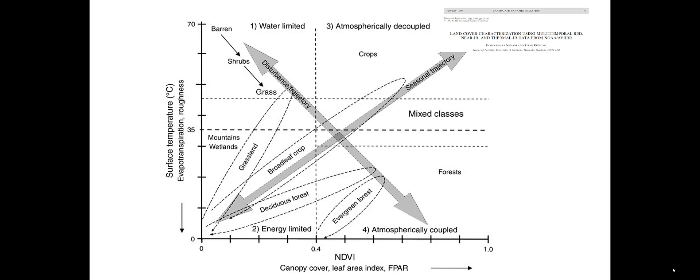One index we can derive from MODIS is called the Disturbance Index, from a paper by Namani and Running. It compares the temperature of a pixel to its greenness, with the idea that if that ratio varies in a negative or positive direction, we can tell what type of environment that pixel is under. In different quadrants, greenness is on the x-axis and temperature on the y. Areas with very low greenness and high surface temperature are indicative of desert-type water-limited environments, while areas high in NDVI that are cool are more indicative of forests.